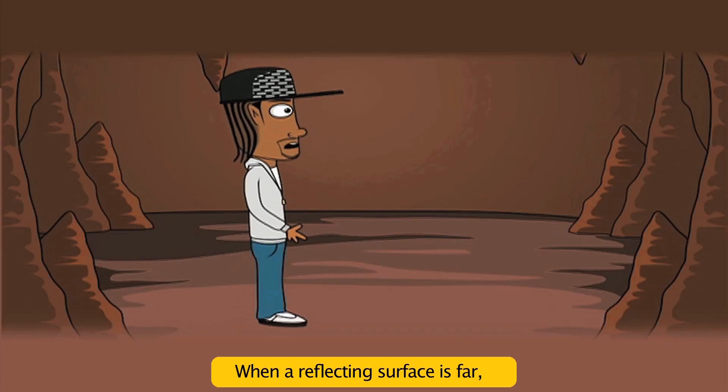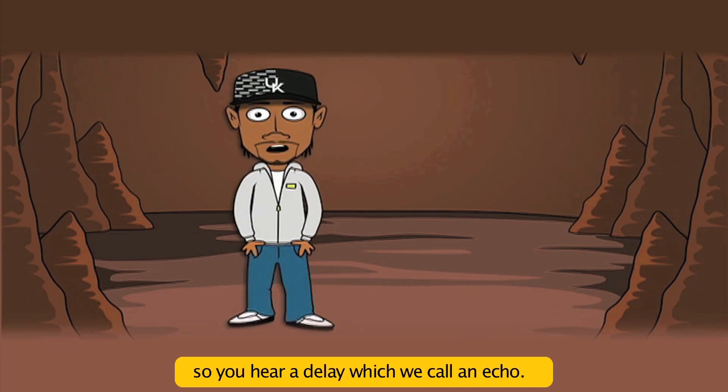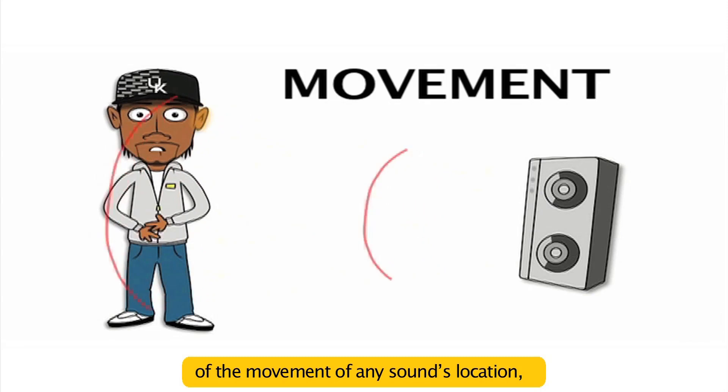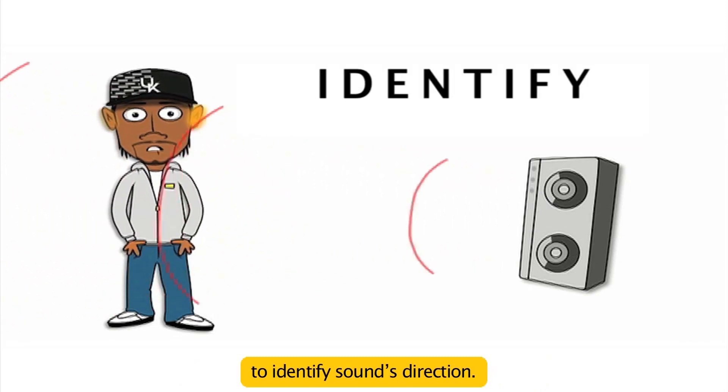When the reflecting surface is far, like up in a cave and you're shouting hello, the gap in reflections is more apart, so you hear a delay which we call an echo. Delays can give illusions of the movement of any sound's occasion, because human hearing has evolved to identify sound's direction.